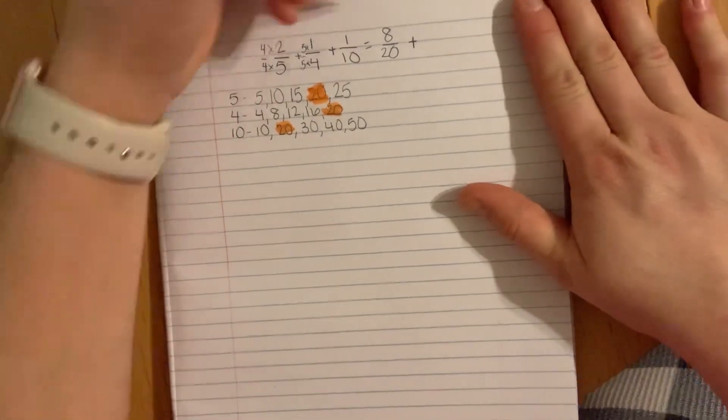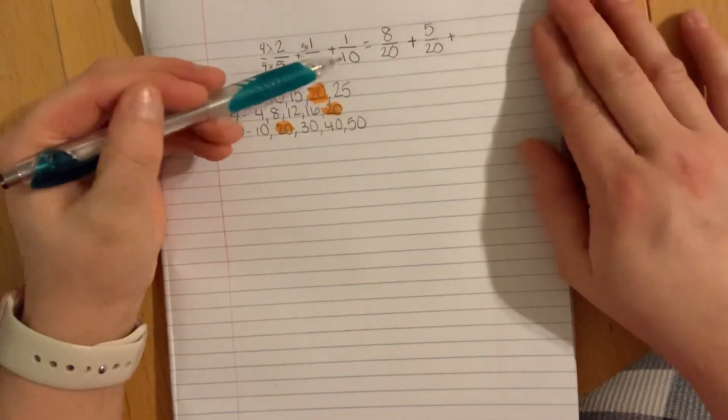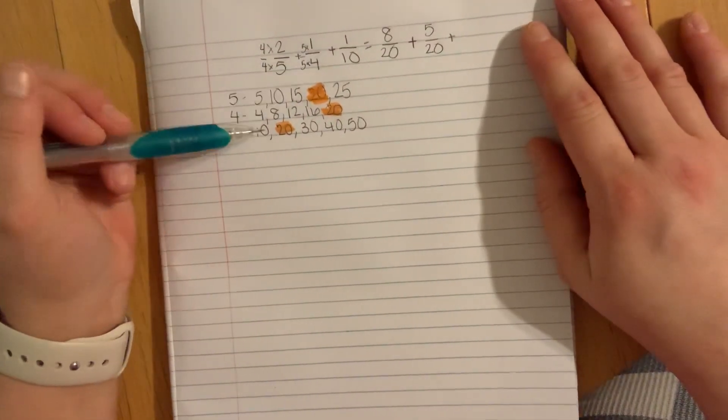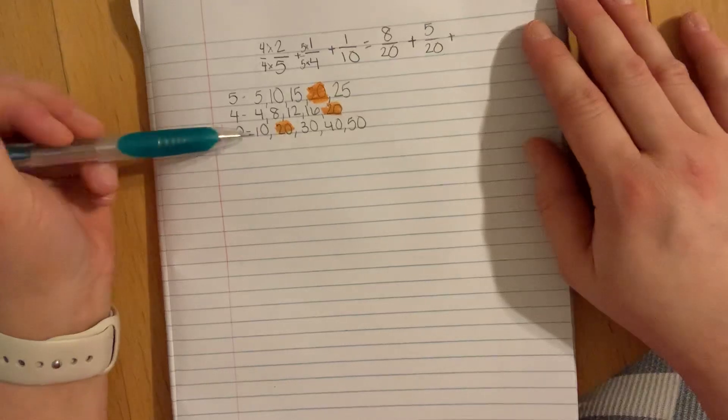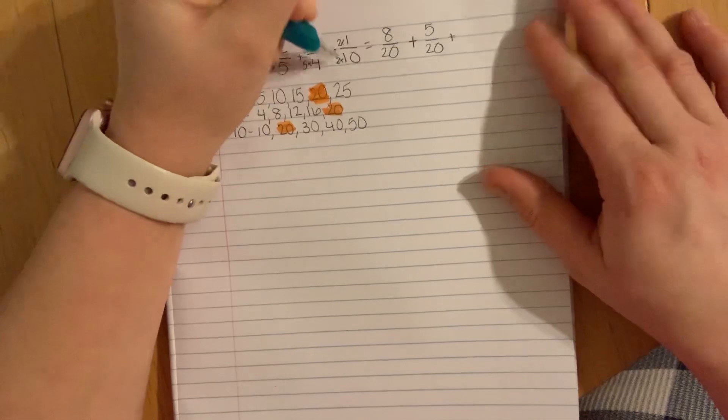Now we have 1 tenth. We need to make it have the common denominator of 20, so we multiply it by 2. Again, numerator and denominator both by 2. That's going to give us 2 twentieths.